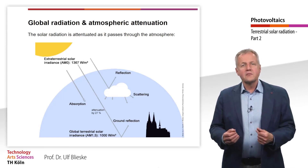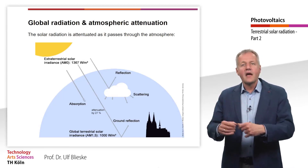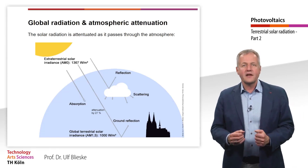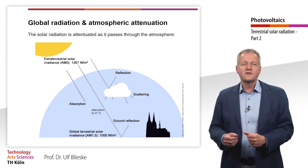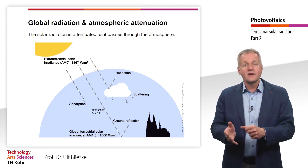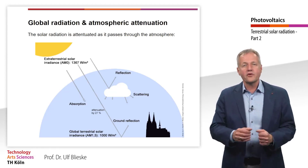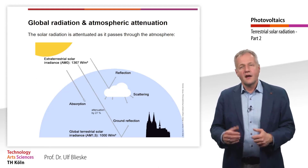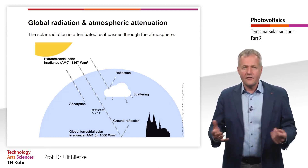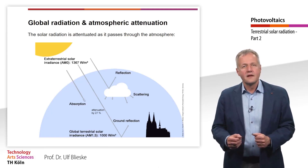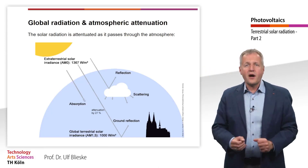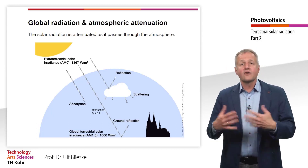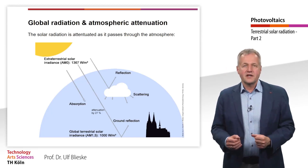The attenuation between AM0 and AM1.5 solar irradiance is 27%, which corresponds to the difference between 1367 and 1000 Watt per square meter divided by the AM0 irradiance of 1367 Watt per square meter. The portion of radiation not passing through clouds is called direct beam radiation.